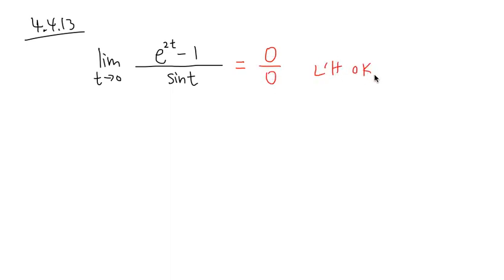So L'Hôpital's rule, okay. By that, we mean we can differentiate the numerator and also differentiate the denominator. However, this is not a quotient rule, this is L'Hôpital's rule. We are still dealing with the limit when t is approaching 0.